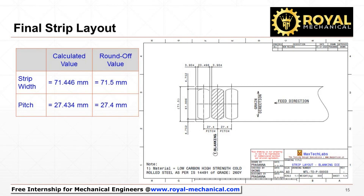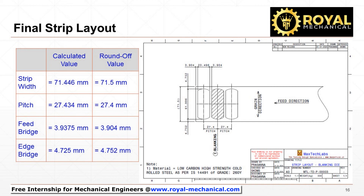We can round off the values of the strip width and pitch. But make sure the utilization is the same, and the feed bridge and edge bridge values are not deviating much from the guidelines. We can round off the strip width to 71.5 millimeters and pitch to 27.4 millimeters. With a pitch of 27.4 millimeters, the feed bridge will become 3.904 millimeters, and with a strip width of 71.5 millimeters, the edge bridge will become 4.752 millimeters.